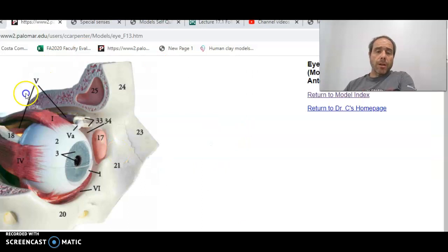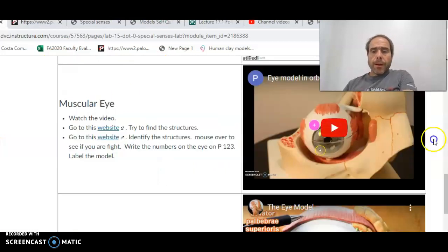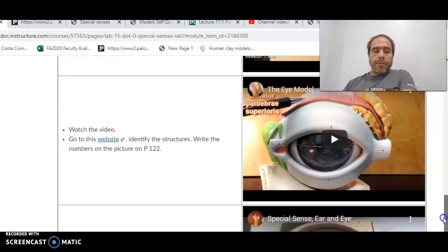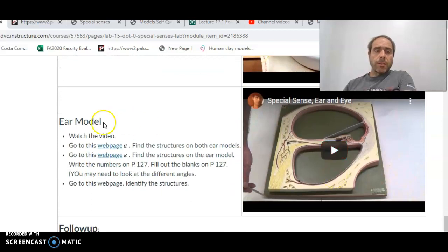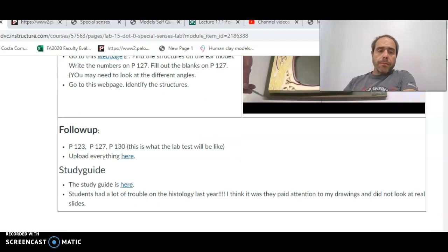So go there, find them. For this page, I'm sending you to Dr. Carpenter's page. So we have the different ones. We have the ear models. So we're going to watch Jonathan's video on this. Then we are going to find the structures. Find the structure on the ear model. Write the numbers. You may need to look at different angles for the numbers. Then you're going to upload everything else here.